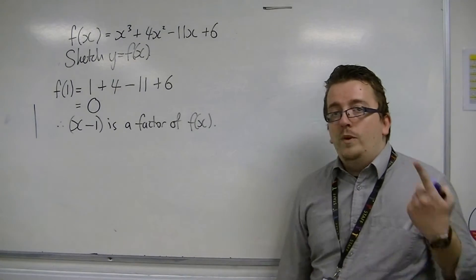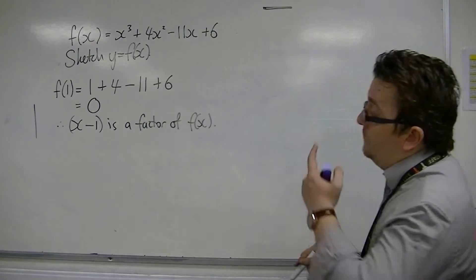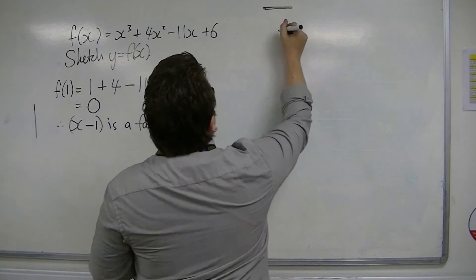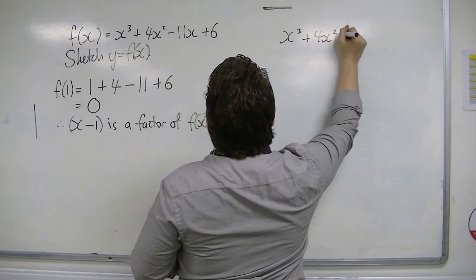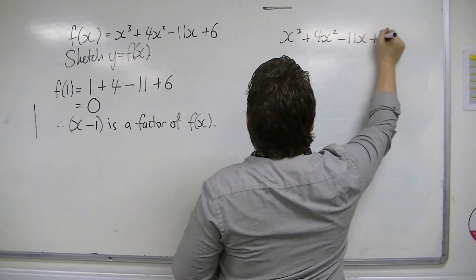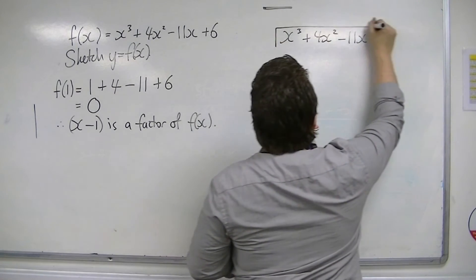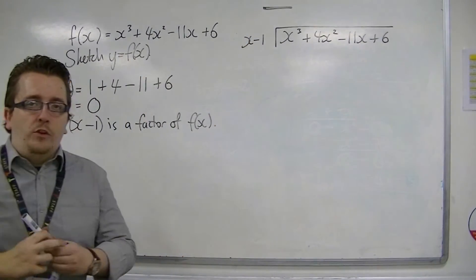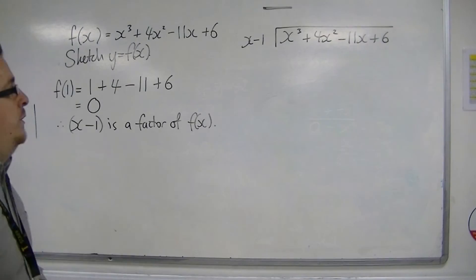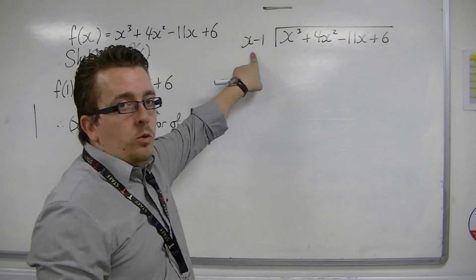So now that we know that, we can use polynomial division. So we're going to have x³ + 4x² - 11x + 6 divided by the x - 1. Because what we want is the quadratic term. We have the linear term, we now want the quadratic term.